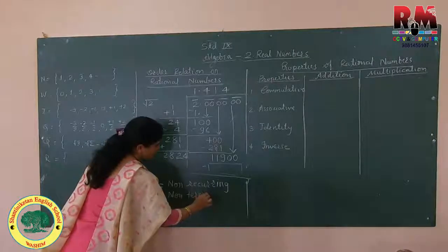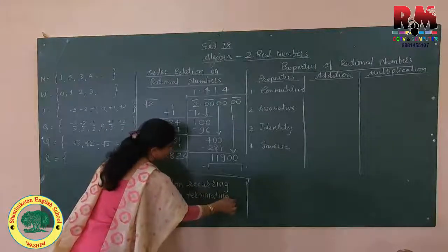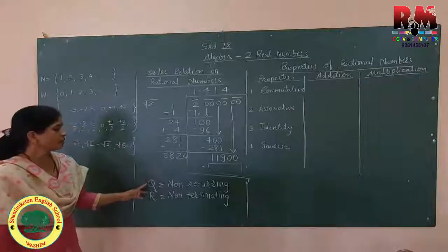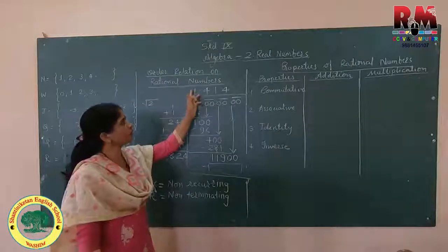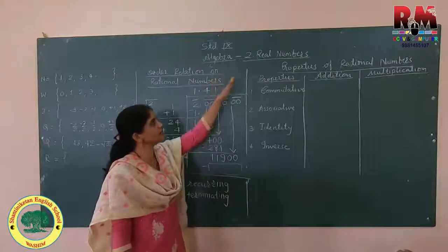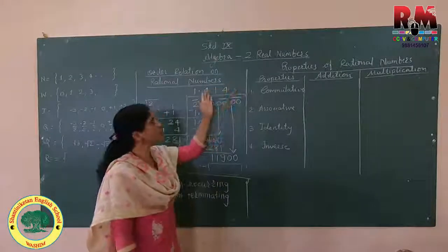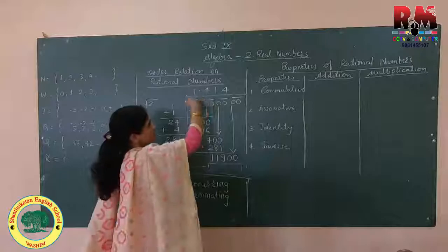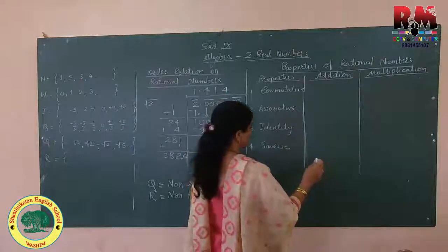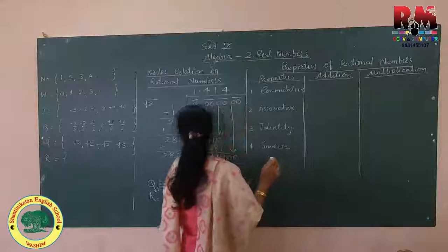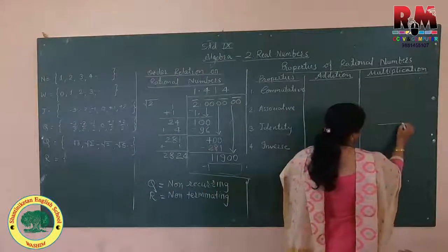Keep these two words in mind: non-recurring quotient means no two numbers are repeated in the same order, or no numbers are repeated in the same order. In some divisions, numbers are repeated in the same order — we will see that here.